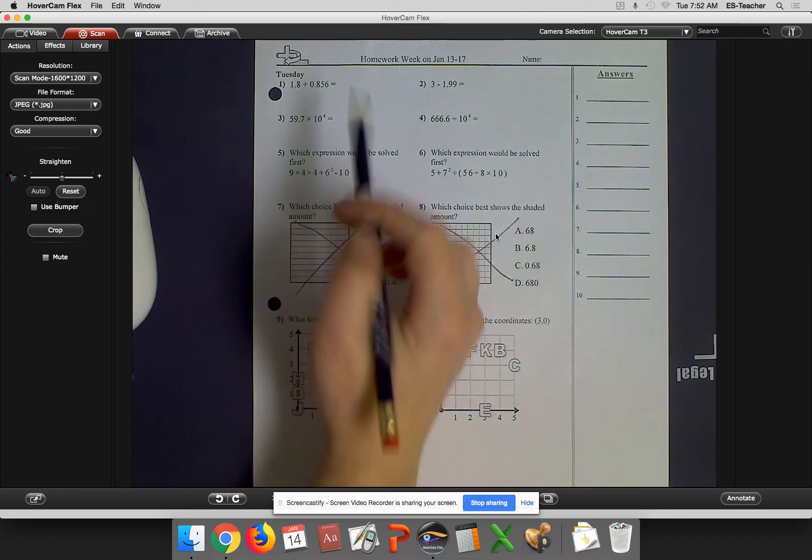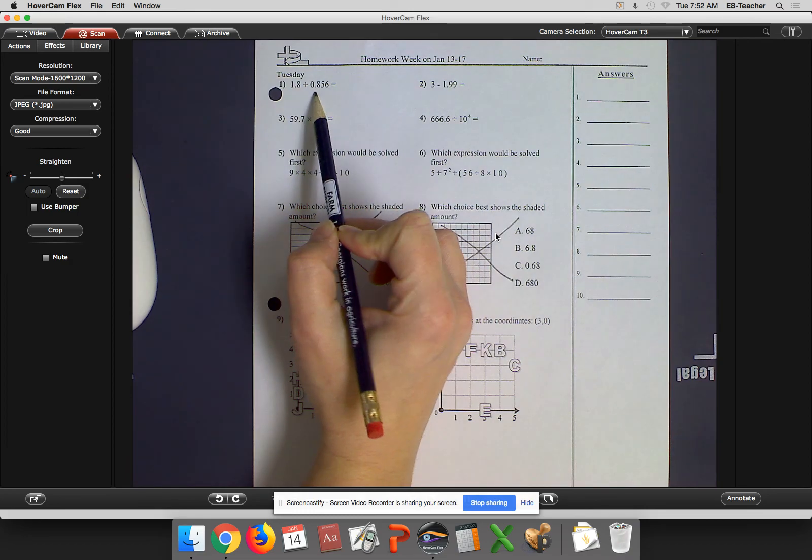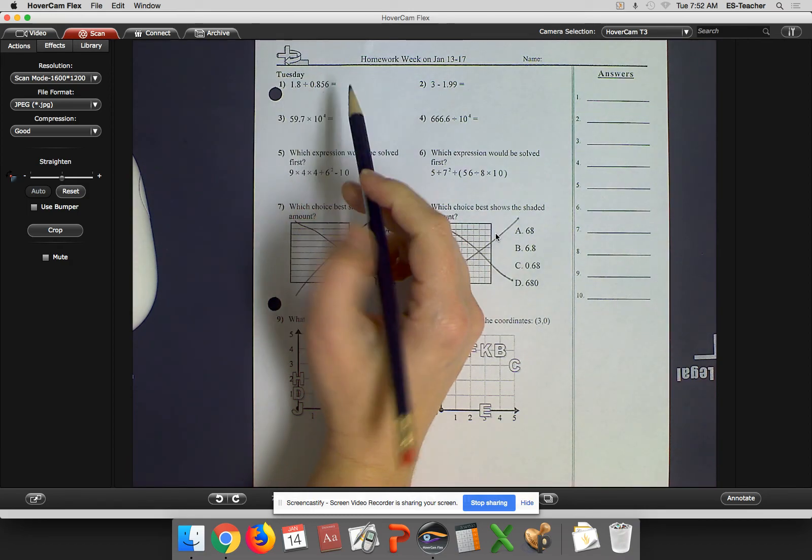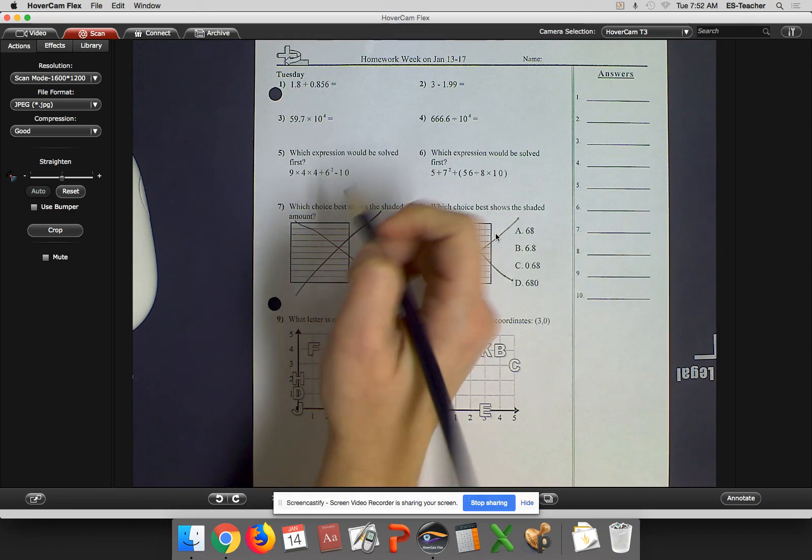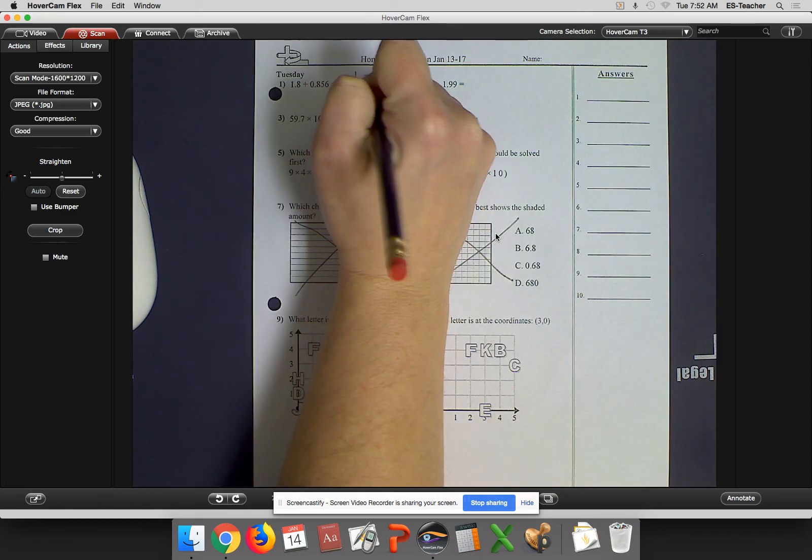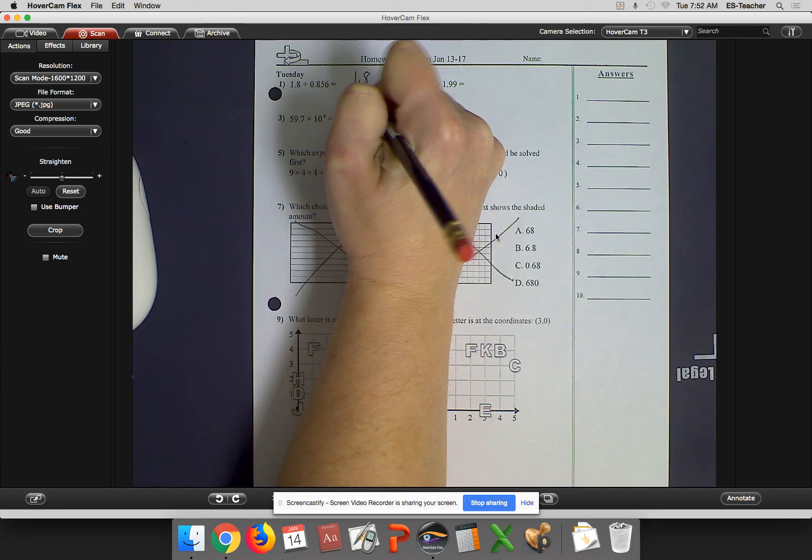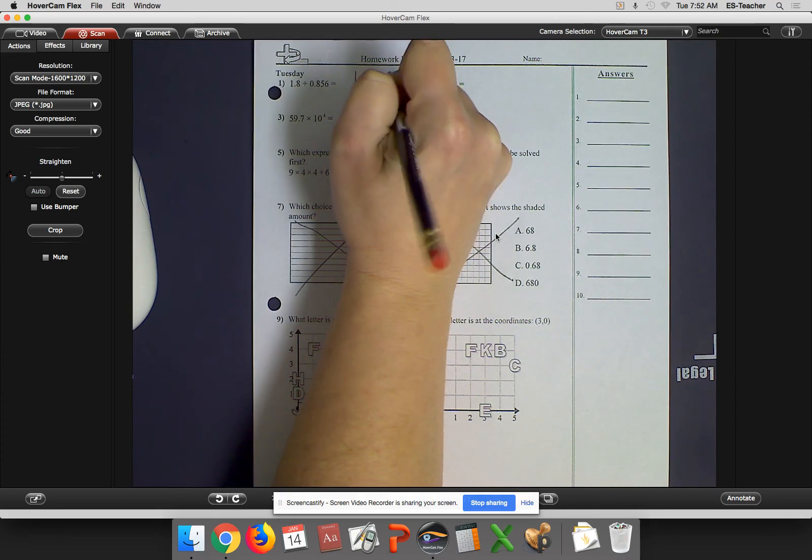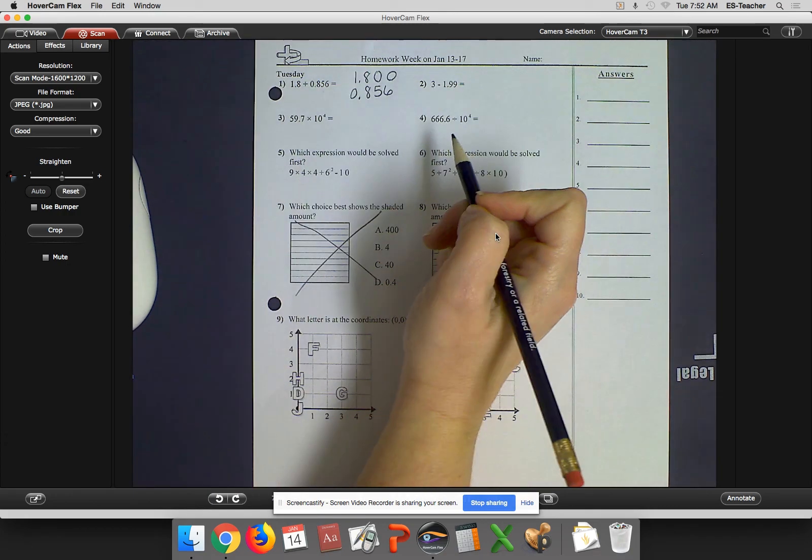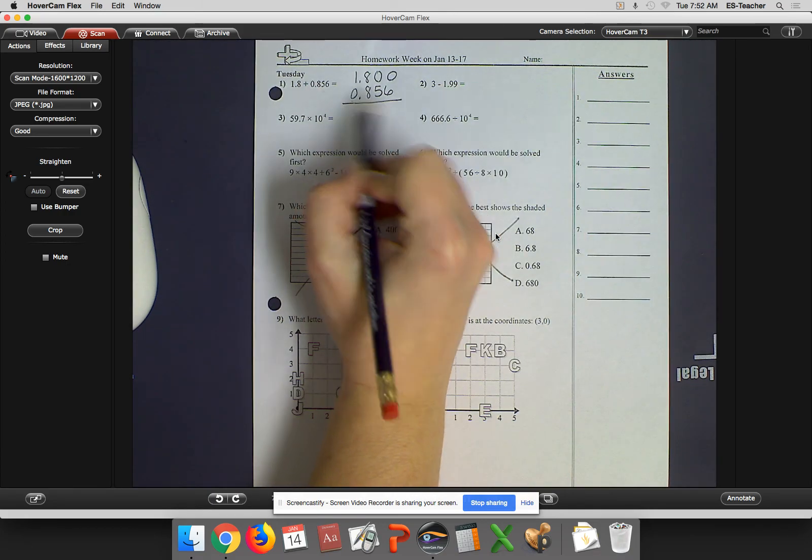So we have 1 and 8 tenths plus 856 thousandths. Remember when you're adding or subtracting a decimal, you line up the decimal. So I have 1 and 8 tenths, and then I have 0, decimal, 8, 5, 6. Then I'm just going to put in 0's as placeholders so that I can keep my column straight.